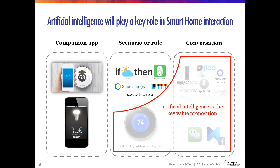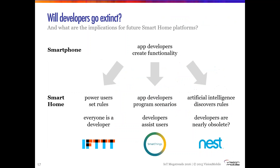Finally, there's control through chat messaging applications — 'please close the blinds,' 'please turn on the lights,' 'please put my home in romantic mode.' This is much more conversational; you can trigger a scenario or a rule. It's a new way of thinking about interacting with your smart home.